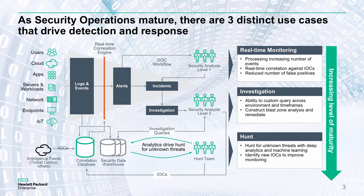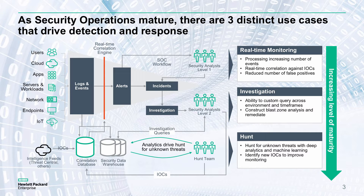In this example, we can see some data is being received. We're looking at that and doing some contextual correlation using a real-time correlation engine. We're generating some alerts and those alerts are going onto the SOC workflow. The level one security analysts will do their initial triage - these are the analysts that are using the ArcSight platform, typically ArcSight ESM, to identify those alerts coming in.